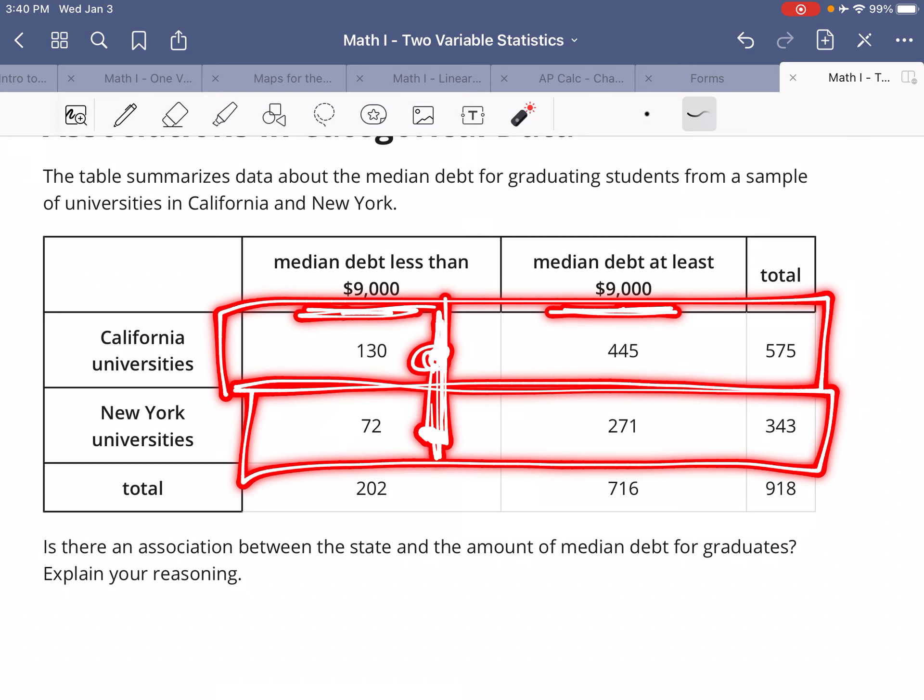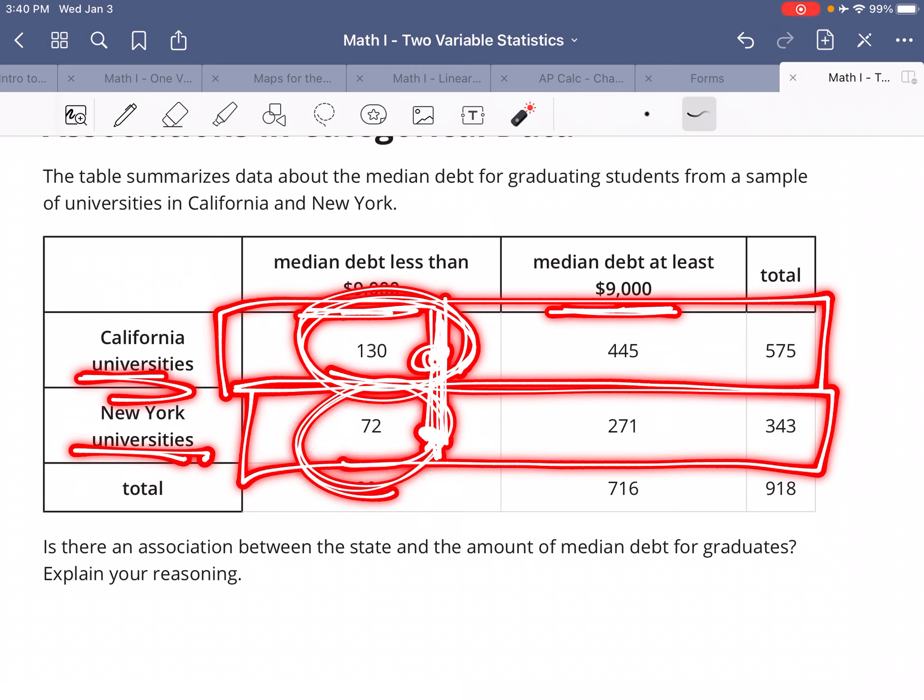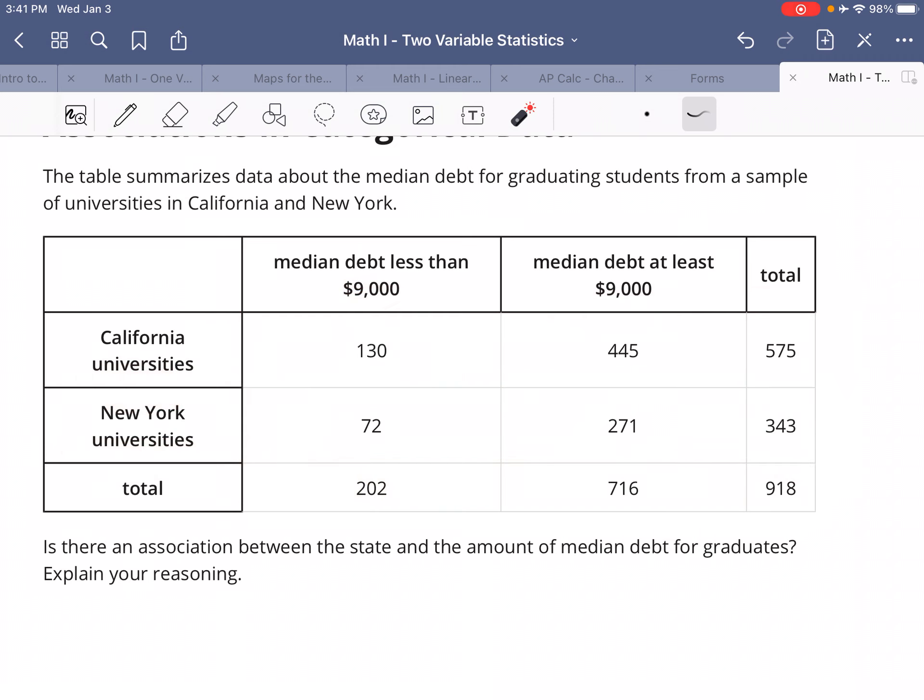If those percentages are similar to each other, then we would say there's no difference between going to a California versus a New York university. Now if you find out that the percent of students with debt less than $9,000 in California universities is like 30% and New York universities is like 50%, then you could see that by going to a New York university, you're more likely to have debt less than $9,000.